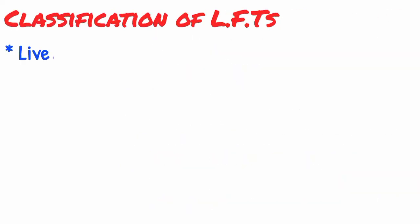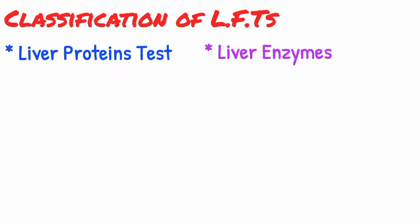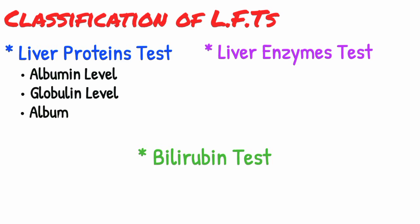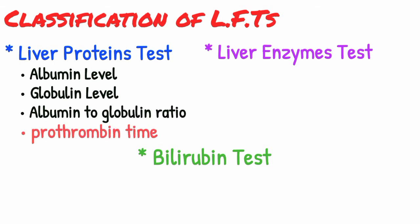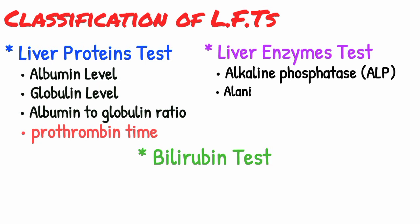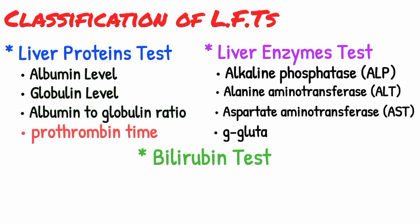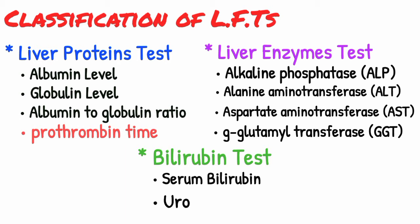Liver function tests are classified into three categories. Number one is liver protein test; number two is liver enzyme test; and number three is bilirubin test. In the liver protein test we determine albumin levels, globulin levels, albumin-to-globulin ratio, and prothrombin time. In the liver enzyme test we measure alkaline phosphatase, alanine aminotransferase, aspartate aminotransferase, and gamma-glutamyl transferase. In the bilirubin test we determine serum bilirubin and urobilinogen.